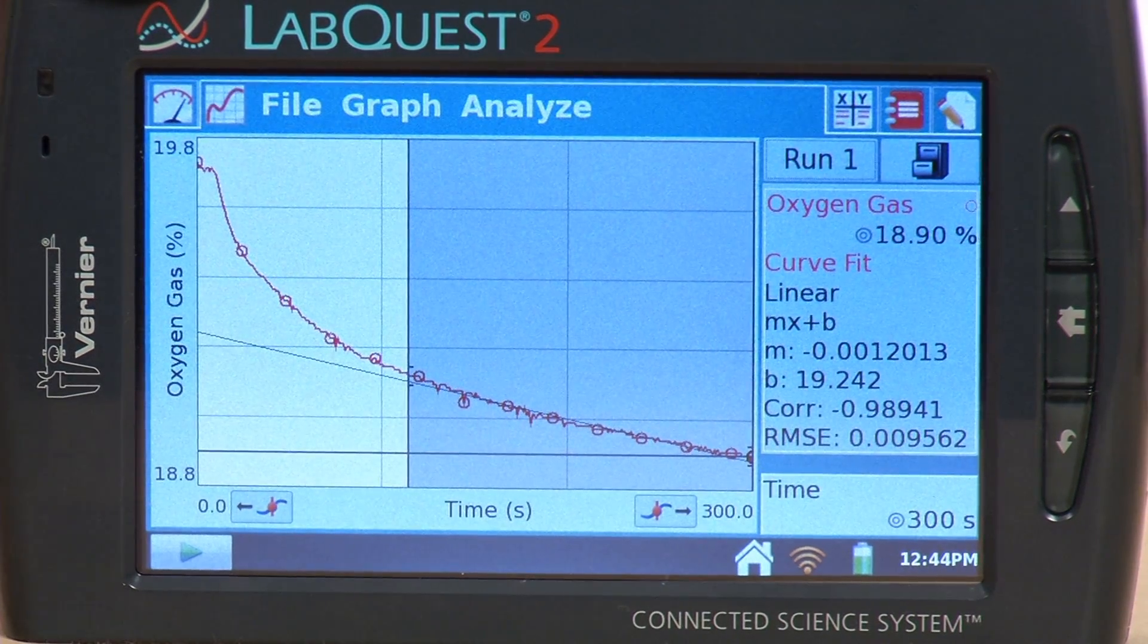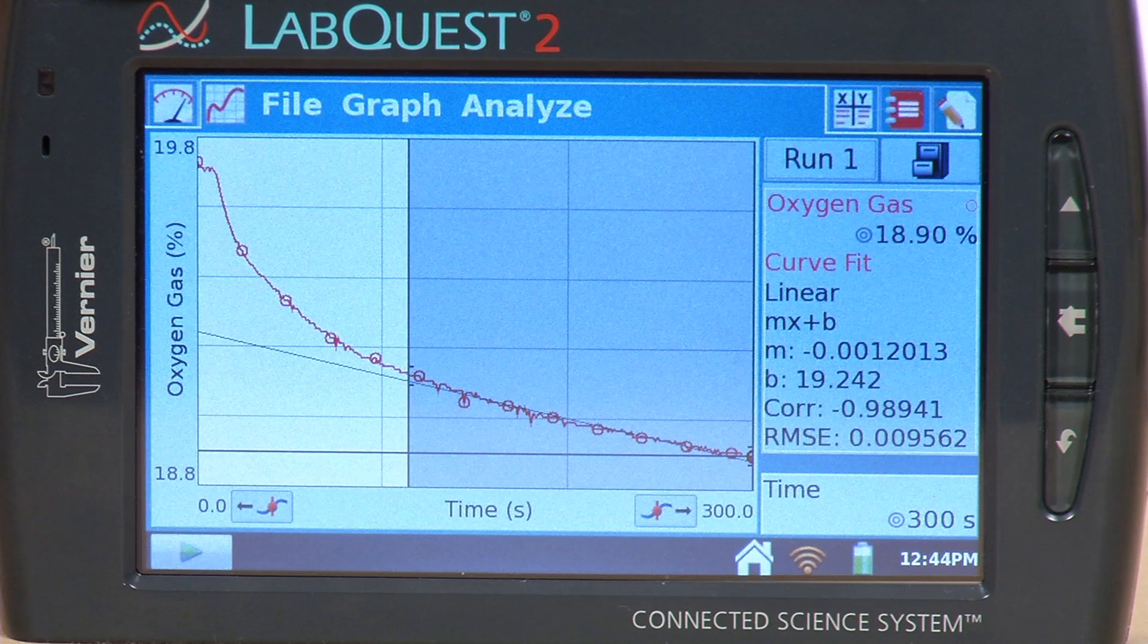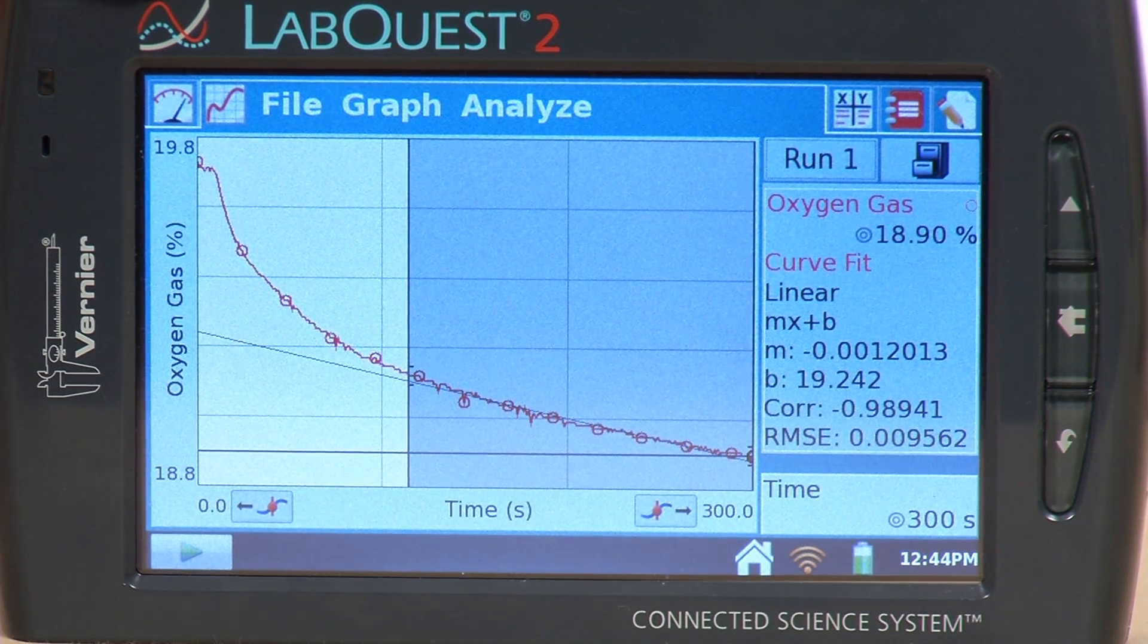And so the slope of that section is displayed there. So it's telling me what the rate of change is for that piece of the graph.